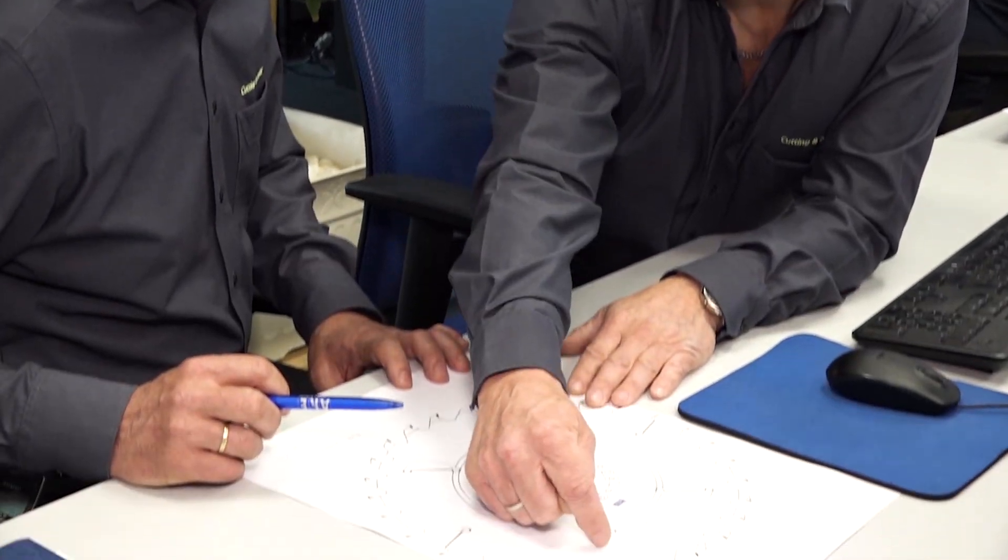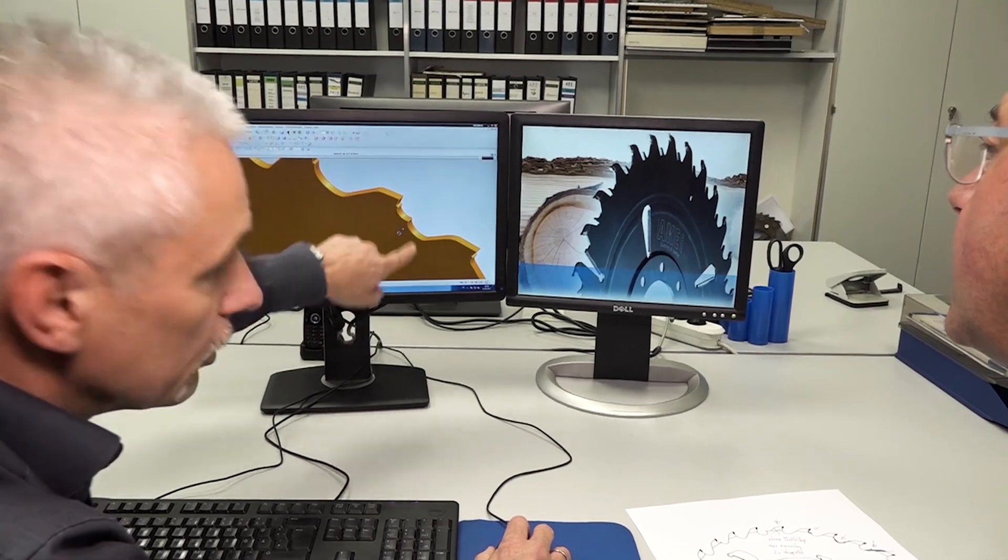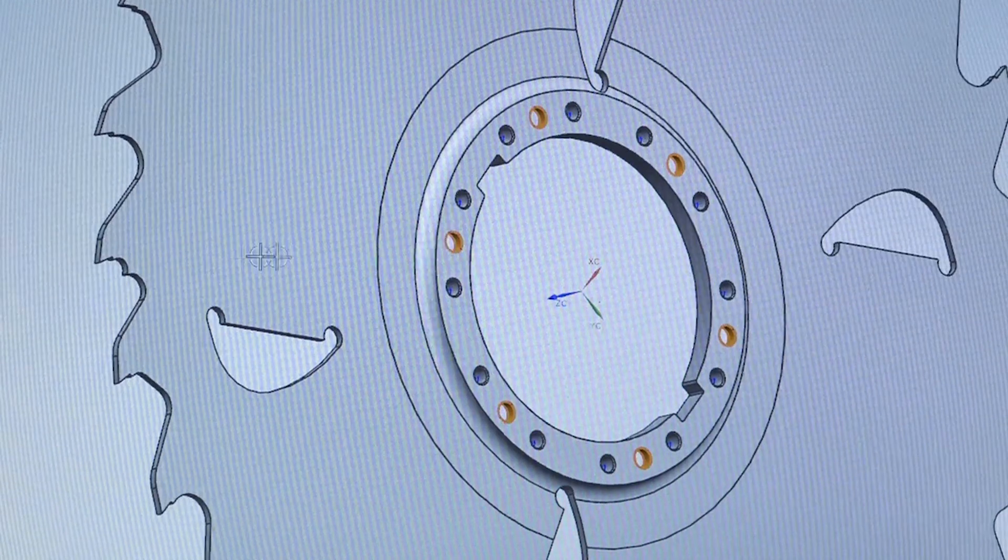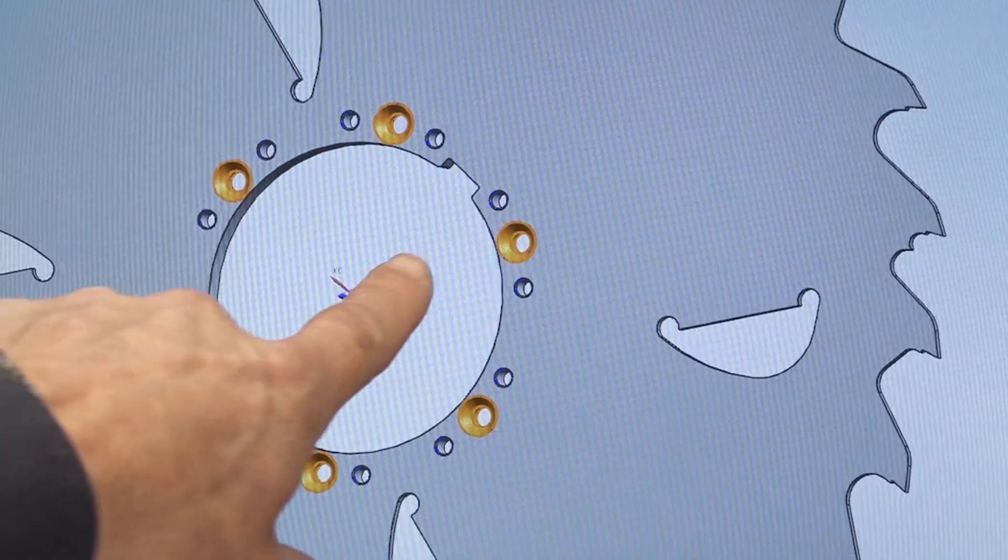In addition, the tree trunks have to race through the system at a speed of 225 meters per minute. The load on the tool is enormous. Despite the stress, the tool must deliver a perfect machining result from the first to the last second.